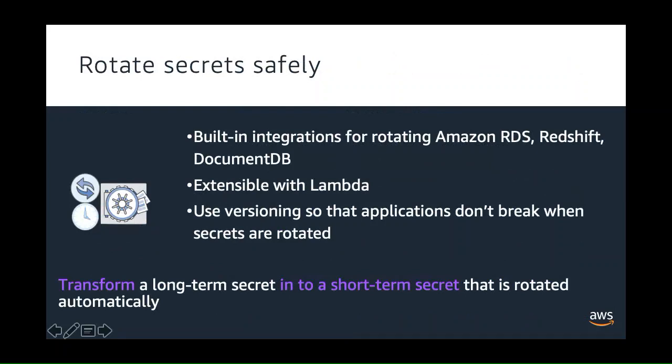You can configure AWS Secrets Manager to automatically rotate the secret for a secured service or database. Secrets Manager natively knows how to rotate secrets for supported Amazon RDS databases. However, Secrets Manager can also be used to rotate secrets for other databases or third-party services by customizing the Lambda functions that implement the rotation.